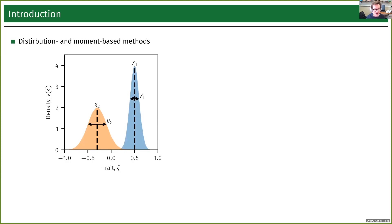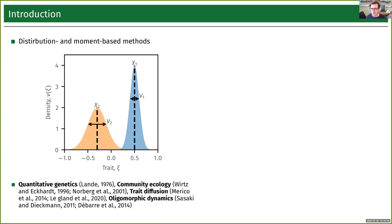If you like to base your ecological model on differential equations, there are two general bodies of theory you can make use of. The first is what I call distribution and moment-based methods, where you track some distributions in trait space — you track a density distribution of normals, tracking the mean traits and variances. These come in all sorts of flavors: quantitative genetics, various community ecology approaches, trait diffusion approaches, and what is known as oligomorphic dynamics, where you have several species.